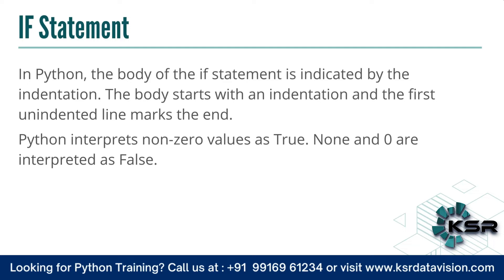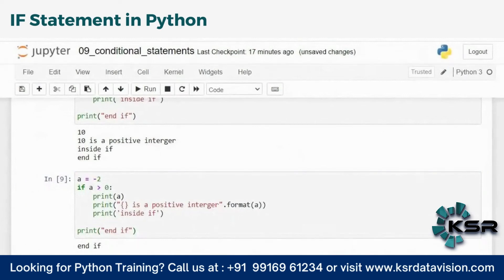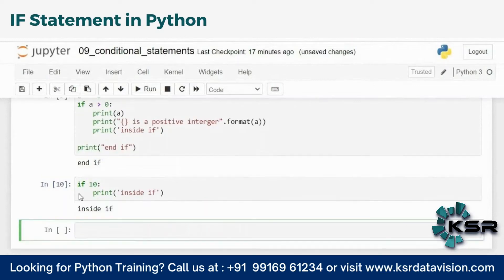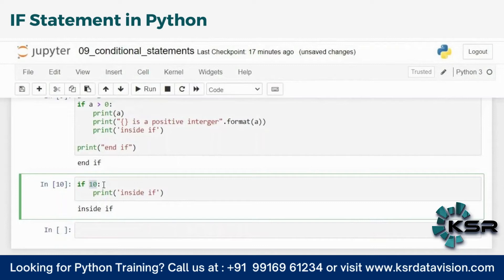The program evaluates the test expression and executes the statements only if the expression is true. If the test expression is false, the statements are not executed. The body of the if statement is indicated by indentation. Python interprets non-zero values as true; None and zero are interpreted as false. So anything like 1, 5, or True is true — only zero and None are false. If I write 'if 10: print inside if', it executes because 10 is true.